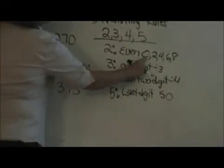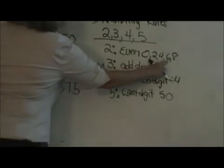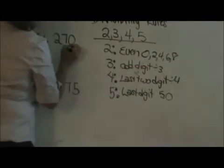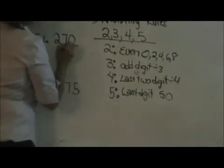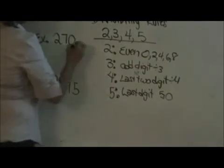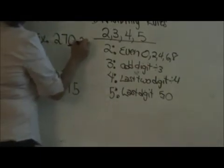Is 270 divisible by 2? Does it end in a 0, 2, 4, 6, or 8? Well, the last digit is a 0. It is even, so it is divisible by 2.